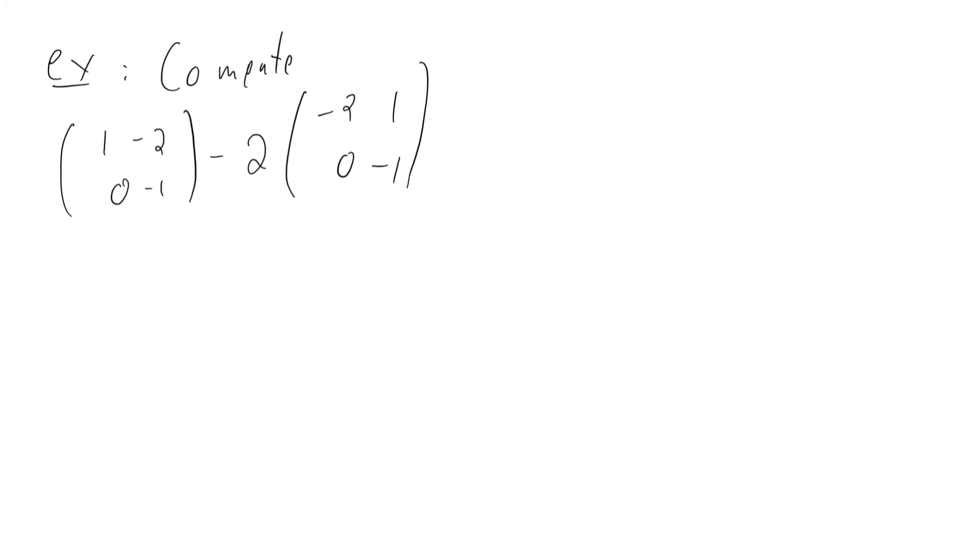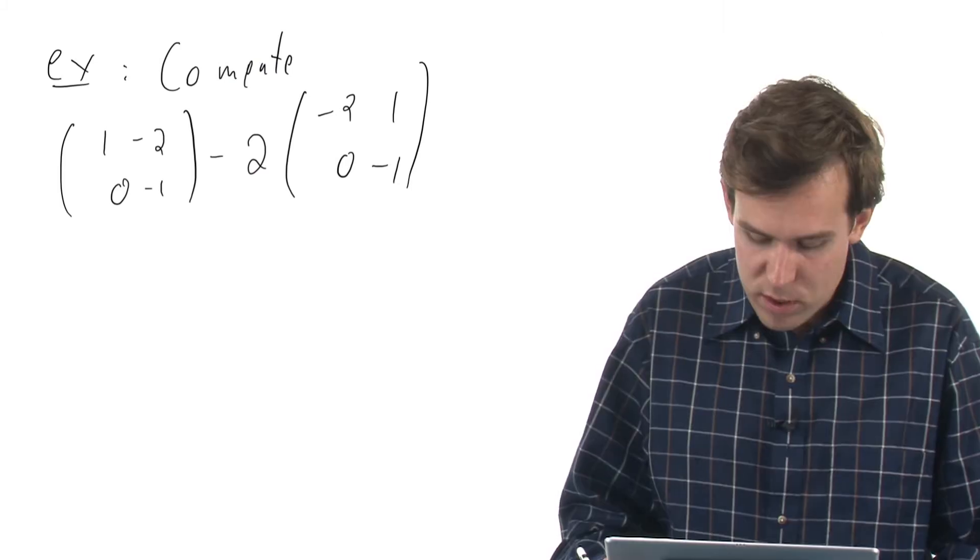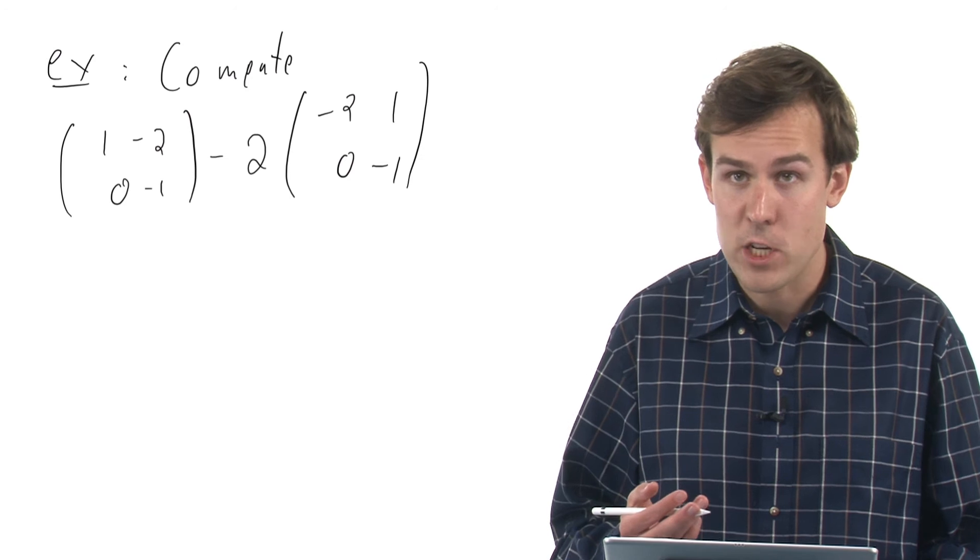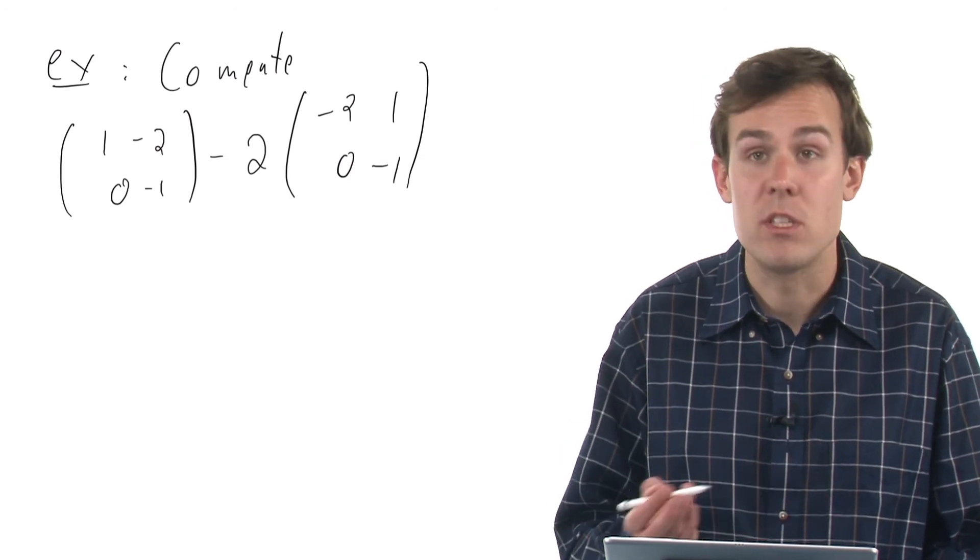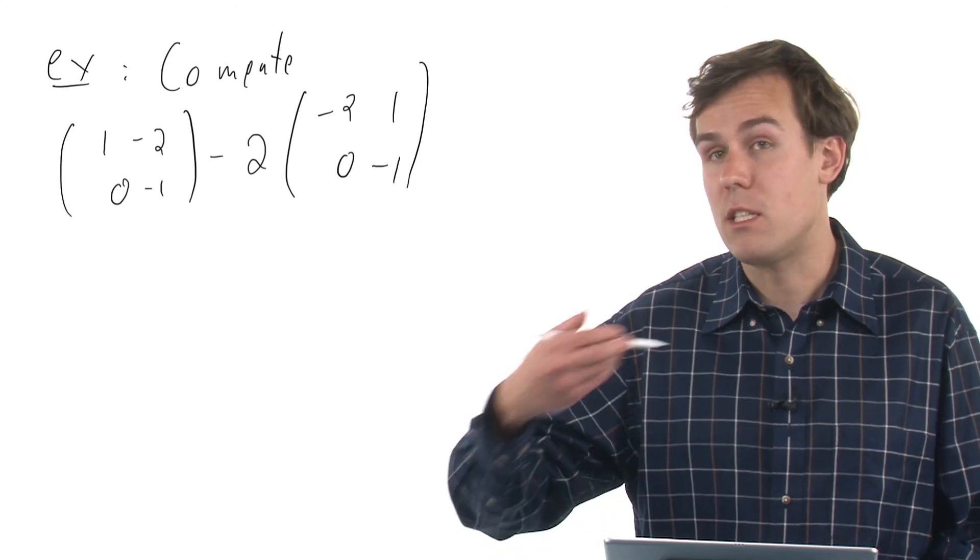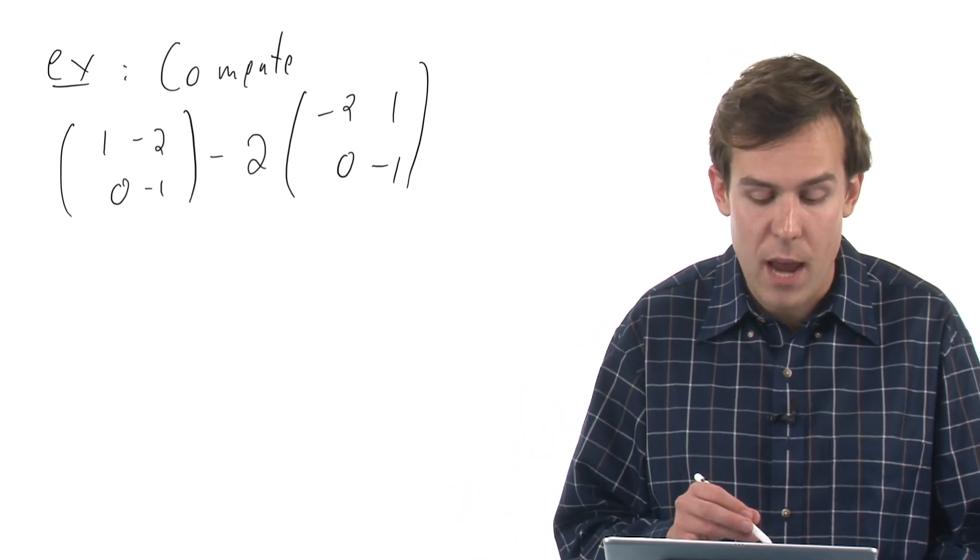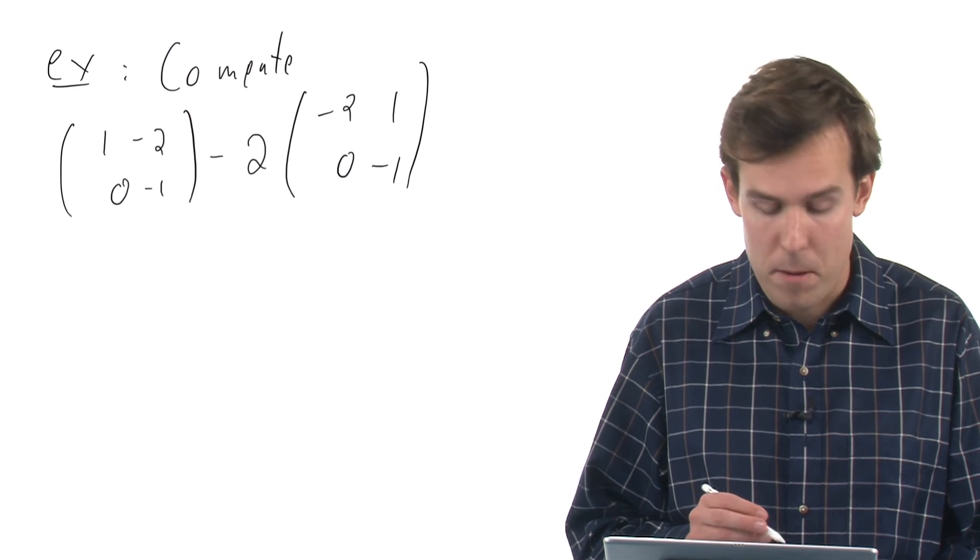Let's look at an example of adding and subtracting matrices with scalar multiplication. Here I have the matrix (1, -2, 0, -1). I want to subtract 2 times the matrix (-2, 1, 0, -1).